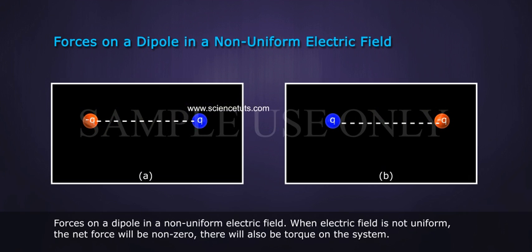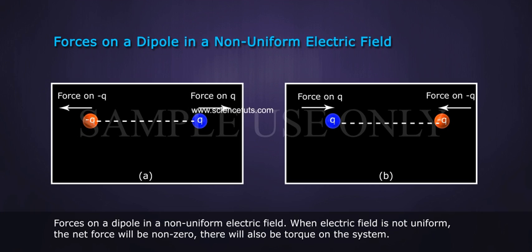Forces on a dipole in a non-uniform electric field: When the electric field is not uniform, the net force will be non-zero. There will also be torque on the system.